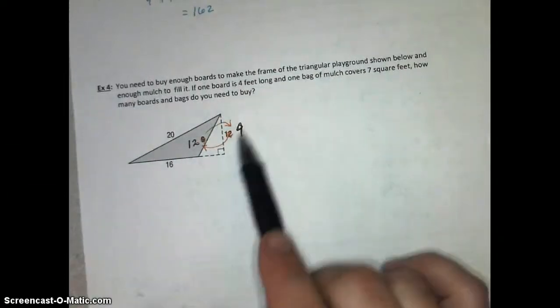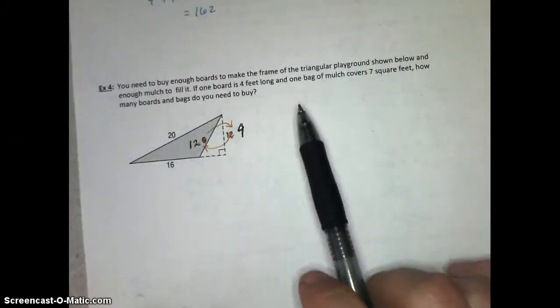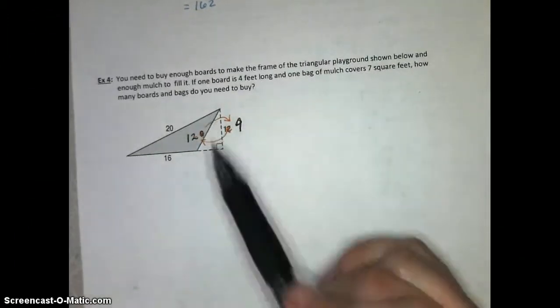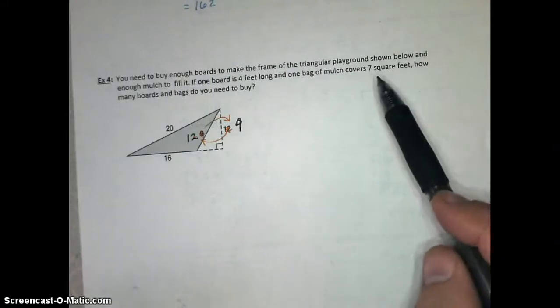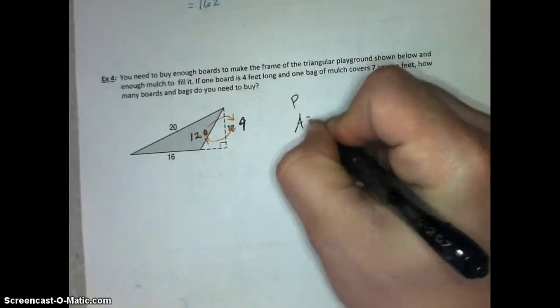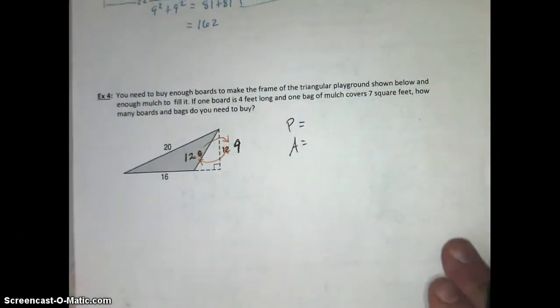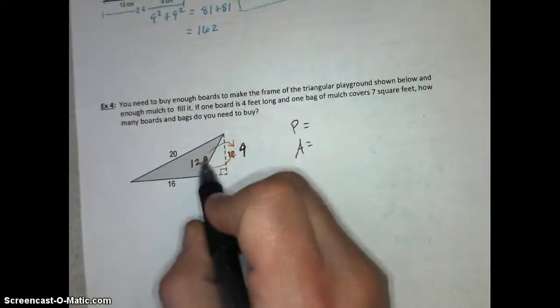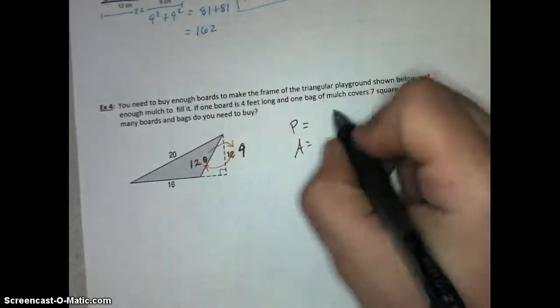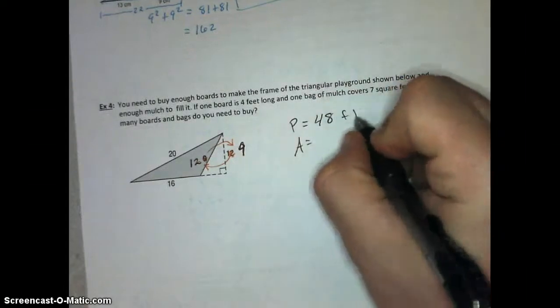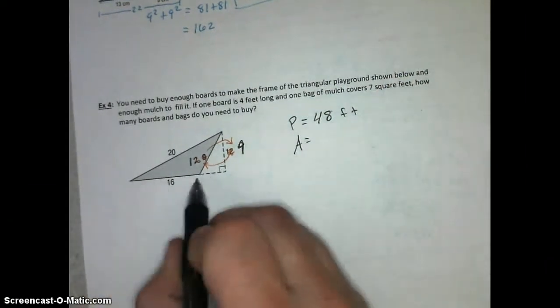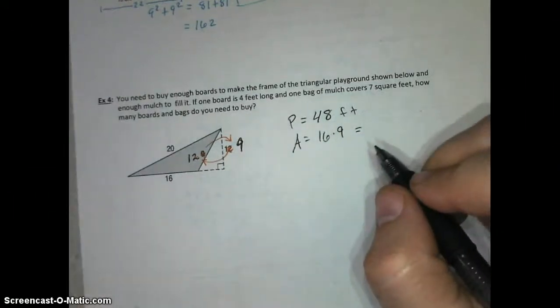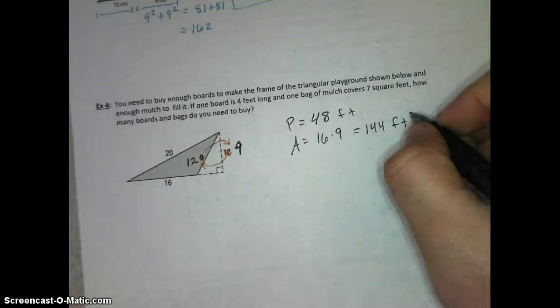So now we'll look at the actual situation. You need to buy enough boards to make the frame of the triangular playground shown below, and you need enough mulch to fill it. Well, the mulch covers square yards or square feet in this case, and that's an area measurement, so we need to know the area. And then the boards to make the frame would be the perimeter. So those are the two measurements we need to find first, perimeter and area. Perimeter is just adding up the sides. 20 plus 16 plus 12 gives us a perimeter of 48 feet. And then area, that's another calculation I'm going to need, is this base 16 times this height, which we changed to 9. 16 times 9 is 144 square feet.